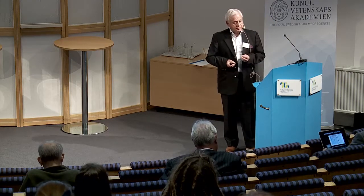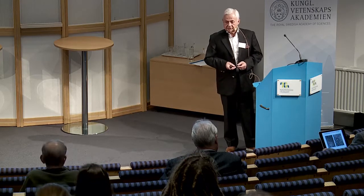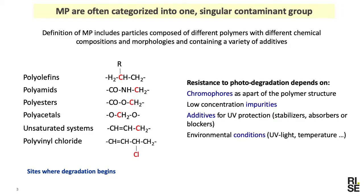Very often, and we heard it before, microplastics are categorized into one singular contaminant group and treated like this. This will not give us the instrument to take care of the problems because we don't know which microplastics will create a risk and which will not. If we are looking into how different materials degrade, they degrade by different degradation pathways. Here you can see the most common group of polymers and where the sites where degradation normally begins are located.